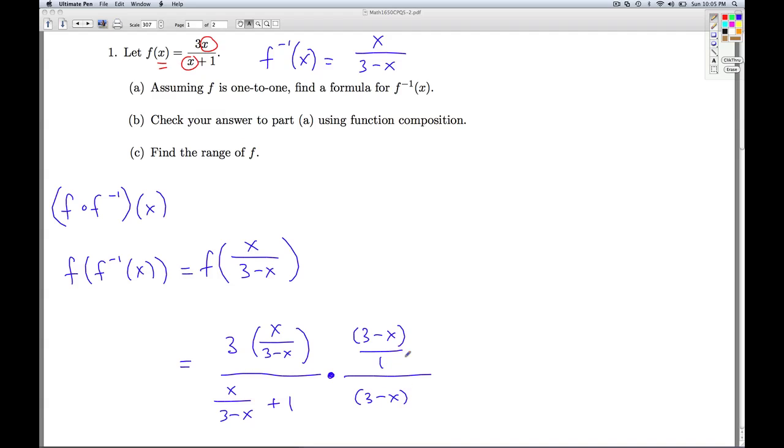And remember, when I do that, I can think of it as multiplying by a fraction, 3 minus x over 1. So, in the numerator, when I multiply, these things cancel out. I'm just left with 3x in the numerator. And in the denominator, I have to remember to distribute. When I multiply this to the first term, the 3 minus x in the denominator cancels that out. And I'm just left with an x. When I multiply it by the second term, I just get my 3 minus x. So, in the numerator, I've got the 3x. In the denominator, it simplifies to 3, which means, miracle of miracles, that cancels out too. So, that'll do it for part b.